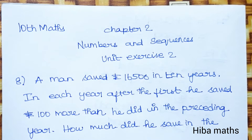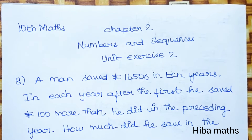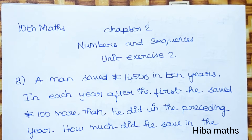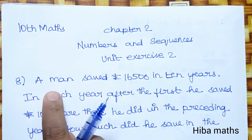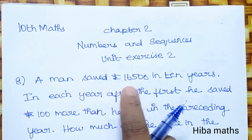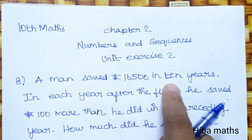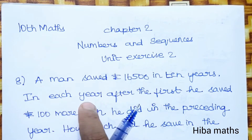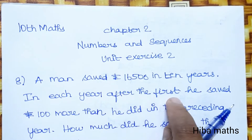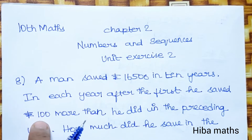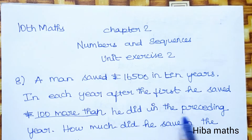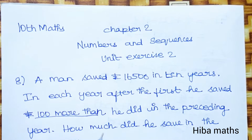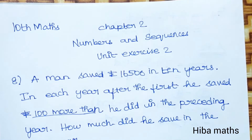Hello students, welcome to Hiba Max 10 Standard Max Chapter 2 Numbers and Sequences Unit XS2A Question episode. A man saved Rs.16,500 in 10 years. In each year after the first, he saved Rs.100 more than he did in the preceding year.